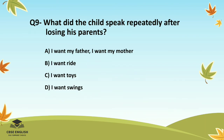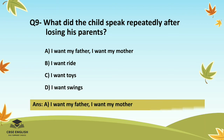Question number nine: What did the child speak repeatedly after losing his parents? Options are: I want my father; I want my mother; I want a ride; I want toys; or I want swings. The correct answers are: I want my father and I want my mother.